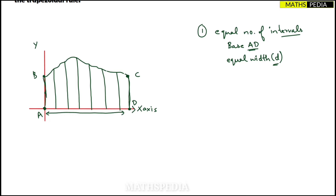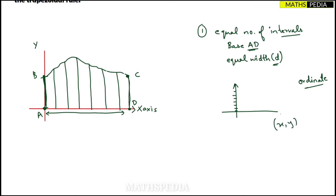Each dividing line has a measurement that we read from the y-axis — these are called ordinates. An ordinate is simply the y-value in an (x, y) coordinate. So to identify each line's measurement, you look at the y-axis. This leads us to the second step.